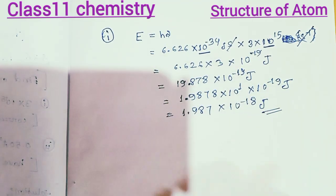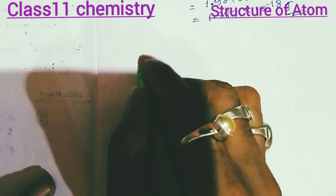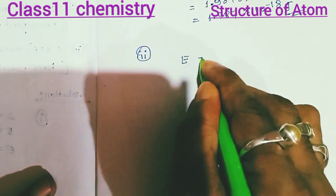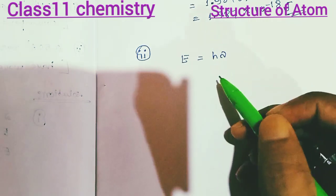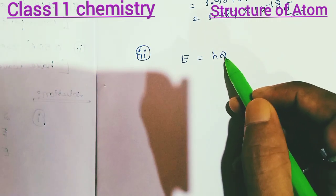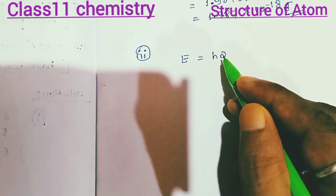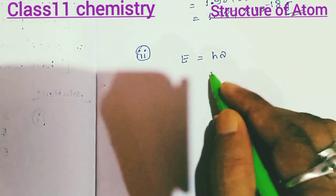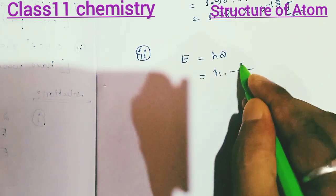We have two number questions to answer. Energy is equal to hν. We have constant h, and we know h. But we don't know ν directly. So we use ν equals c divided by lambda.